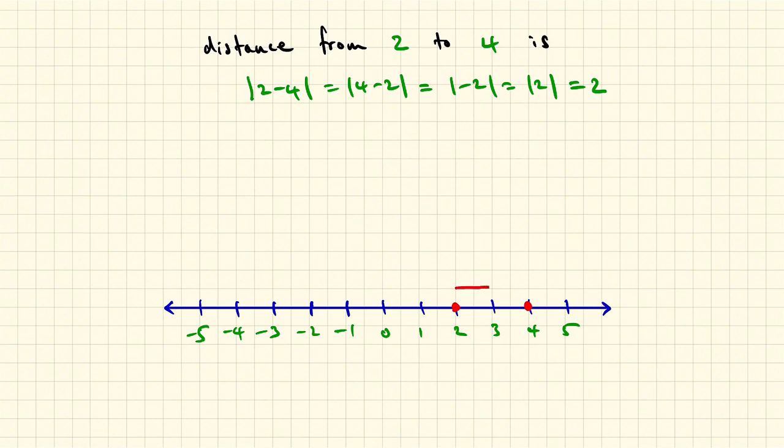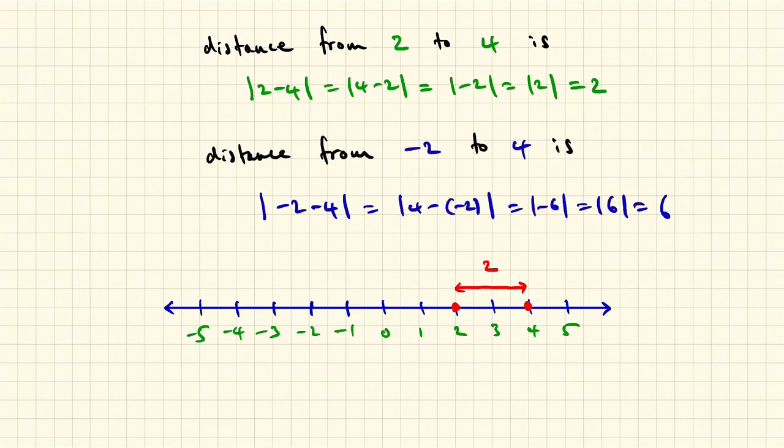If you draw the point two and four on the real line, you can see that the distance really is two units. On the other hand, if we look at the distance between, say, minus two and four, that's the absolute value of the difference, which turns out to be six. And you can see that directly on the real line, the distance between the two numbers turns out to be six.